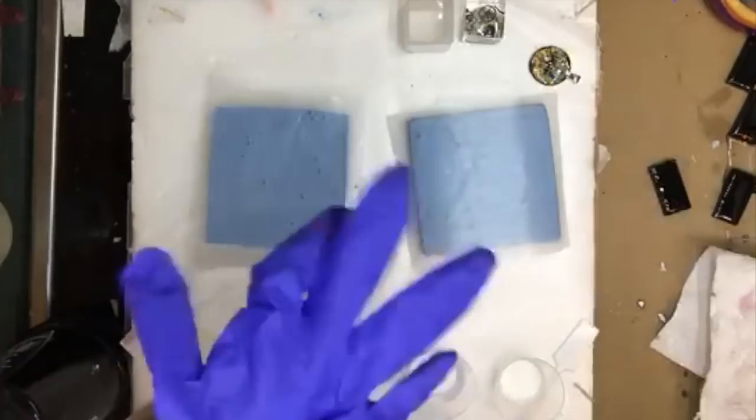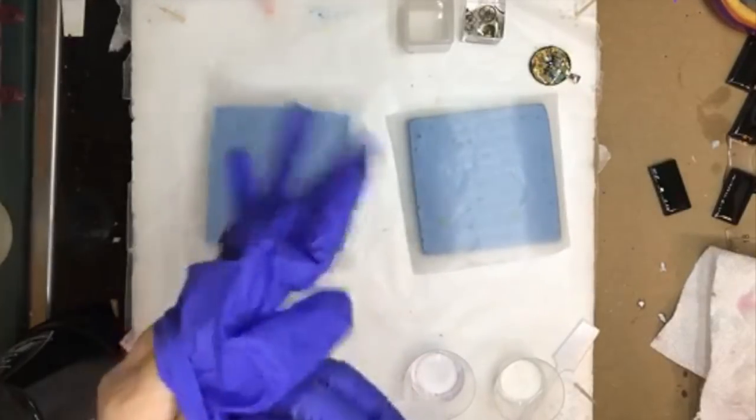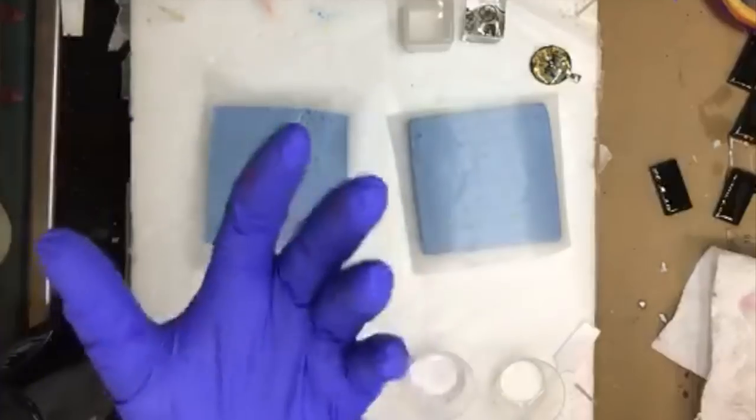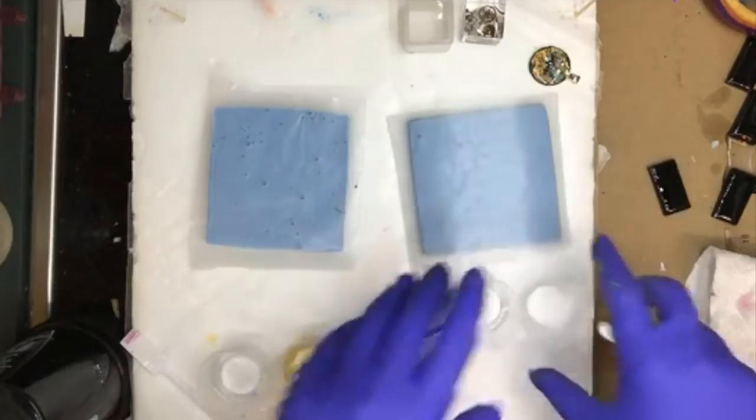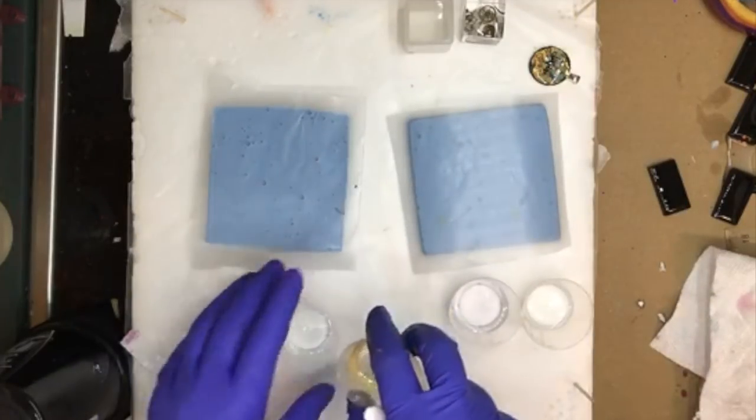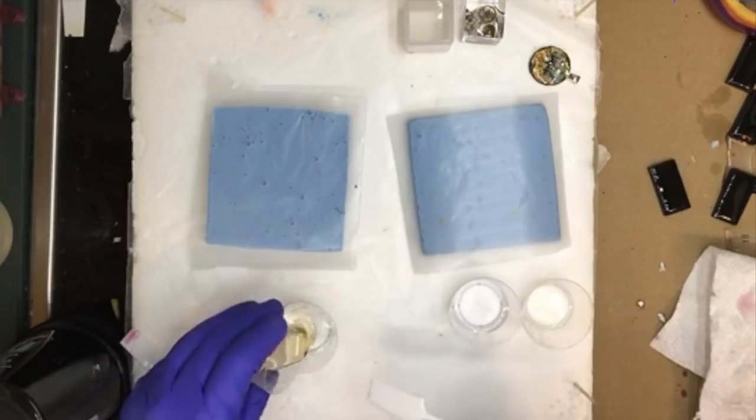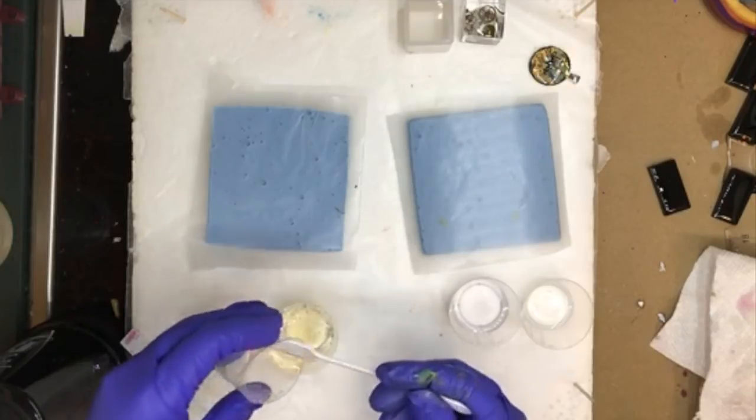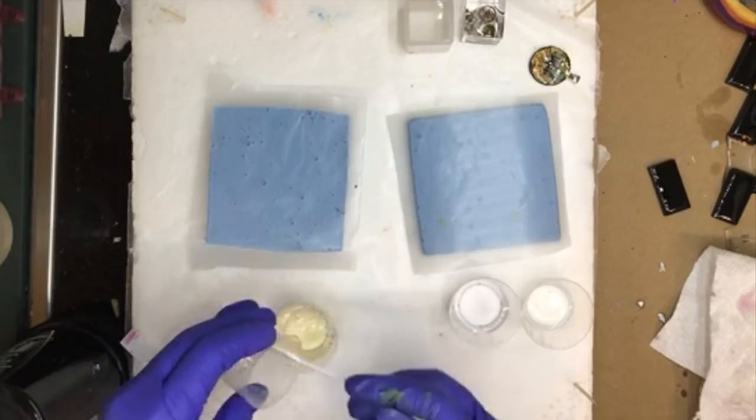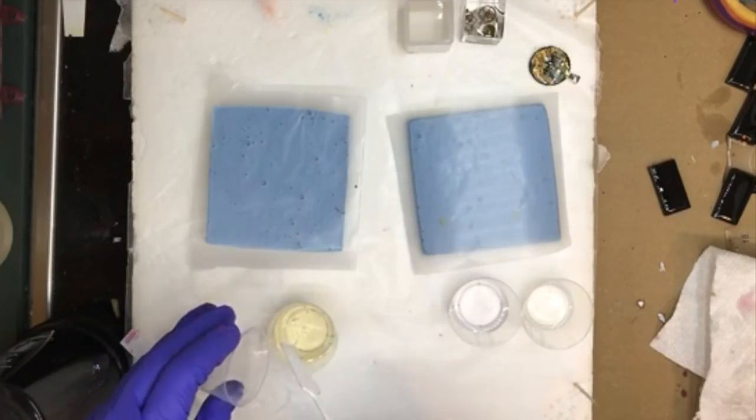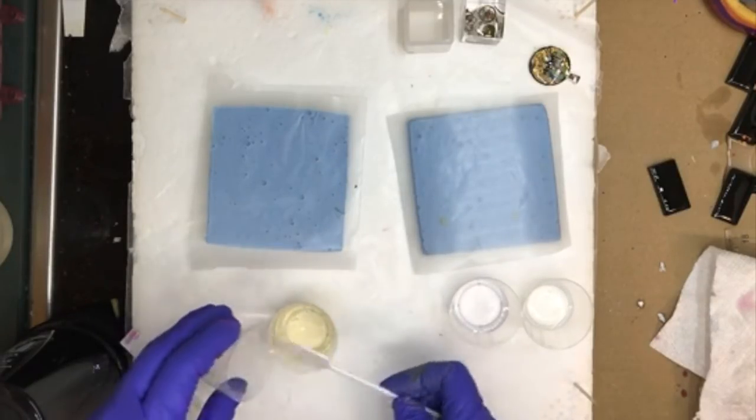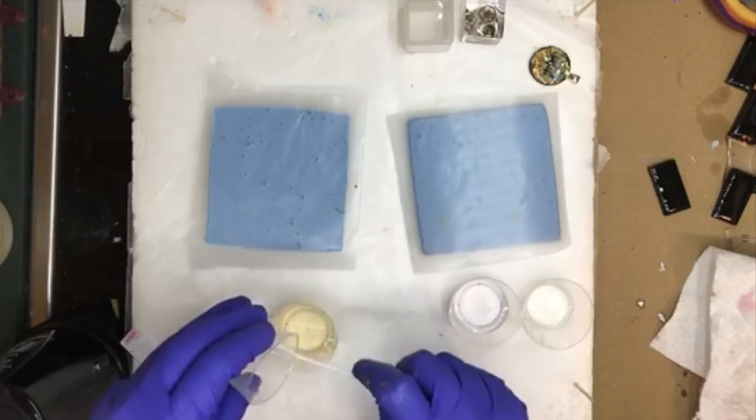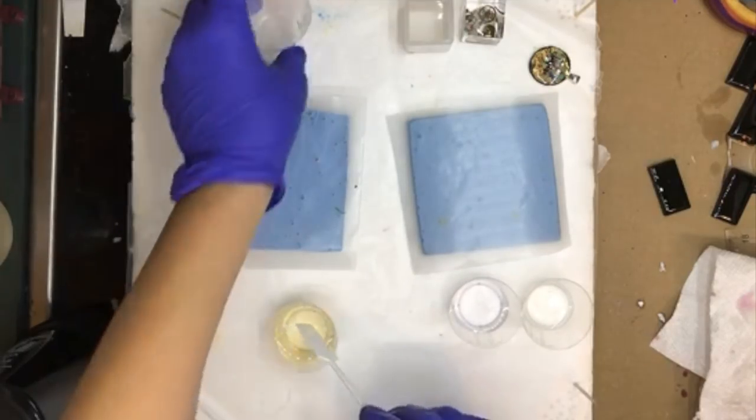So people who are nitrile gloves, they're the least likely to react with your resin. Be sure too that you always work in a well ventilated area. You want to make sure that you've got some fresh air circulating in the room. So I'm going to go ahead and mix my doming resin. You can see here that it's kind of thick. A doming resin is going to have the consistency of something like honey or syrup.